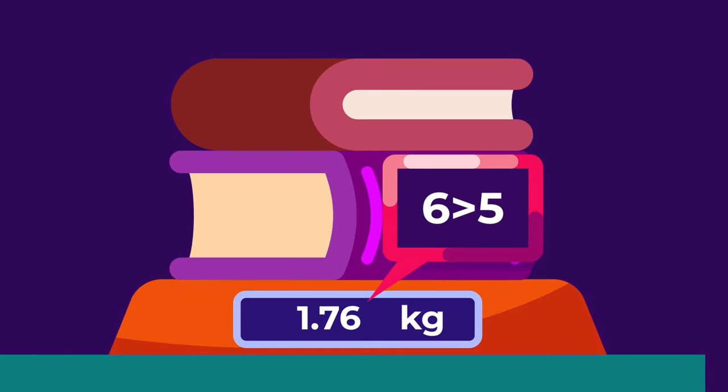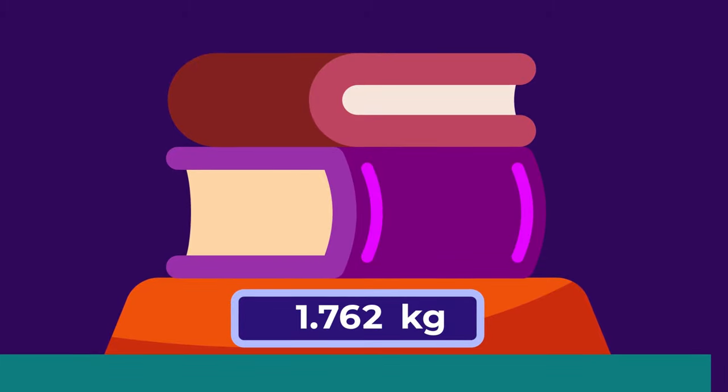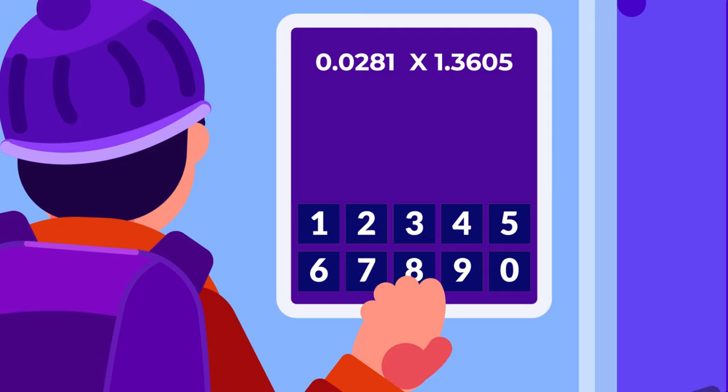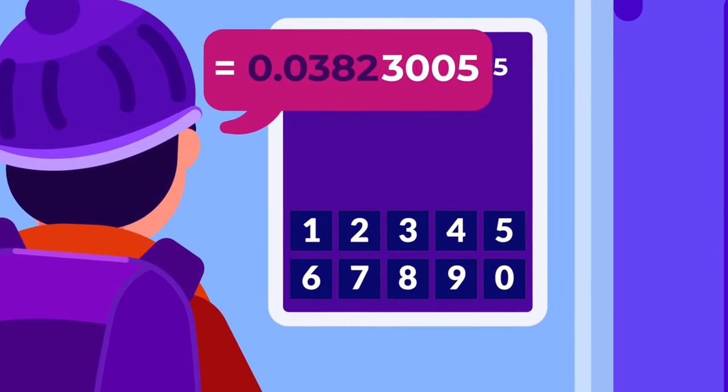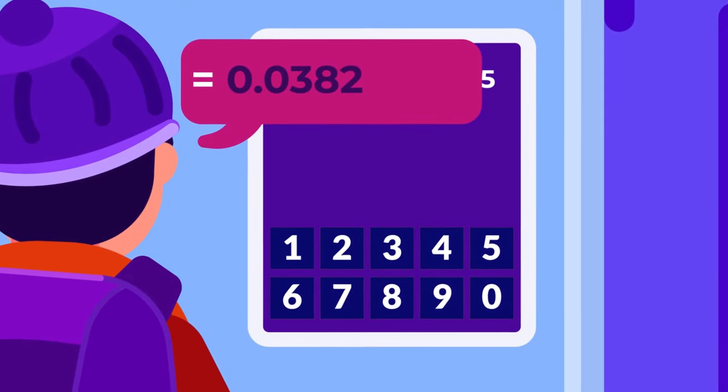If it's greater than 5, we round it up by increasing the last significant digit by 1. So 1.762 is rounded to 1.8. If it's less than 5, like in our second problem, we simply drop all numbers after 2, giving us 0.0382.